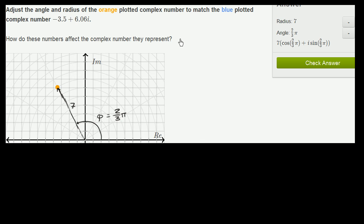So let's verify that this is really the same complex number as negative 3.5 plus 6.06i. We can represent this as 7 times e to the 2 thirds pi i, which we know from Euler's identity is the exact same thing. This is equal to 7 times cosine of 2 thirds pi plus i sine of 2 thirds pi. And they already wrote that down for us right over there.